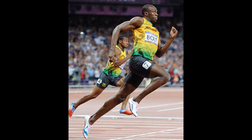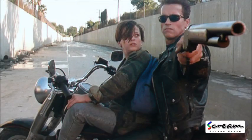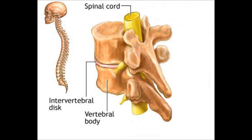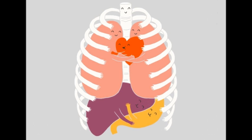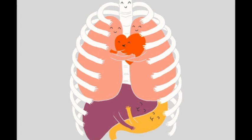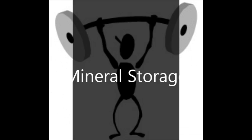Another important function is protection. For example, the fused bones of the skull protect the brain, the vertebrae surround the spinal cord, and the rib cage helps protect the vital organs of the thorax.